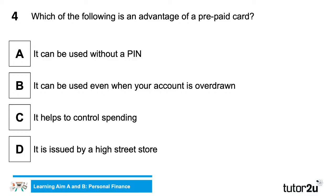Number four — which of the following is an advantage of a prepaid card? A) it can be used without a pin, B) it can be used even when your account is overdrawn, C) it helps to control spending, or D) it is issued by a high street store? Lots of correct answers coming in — this is the best-answered question so far. The answer is C: it does help to control spending, one of the big advantages of a prepaid card.